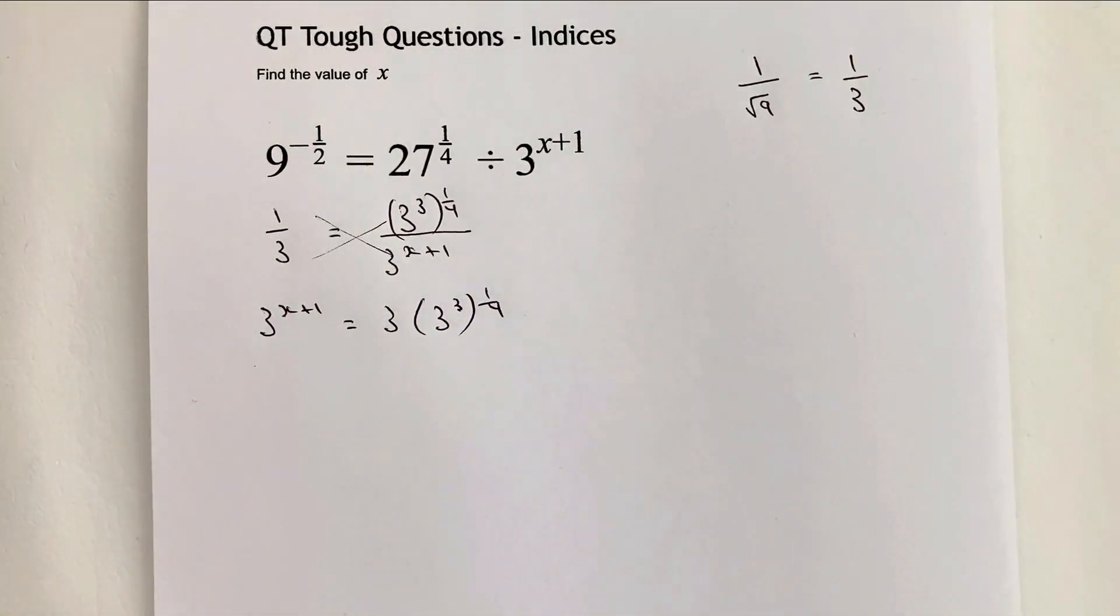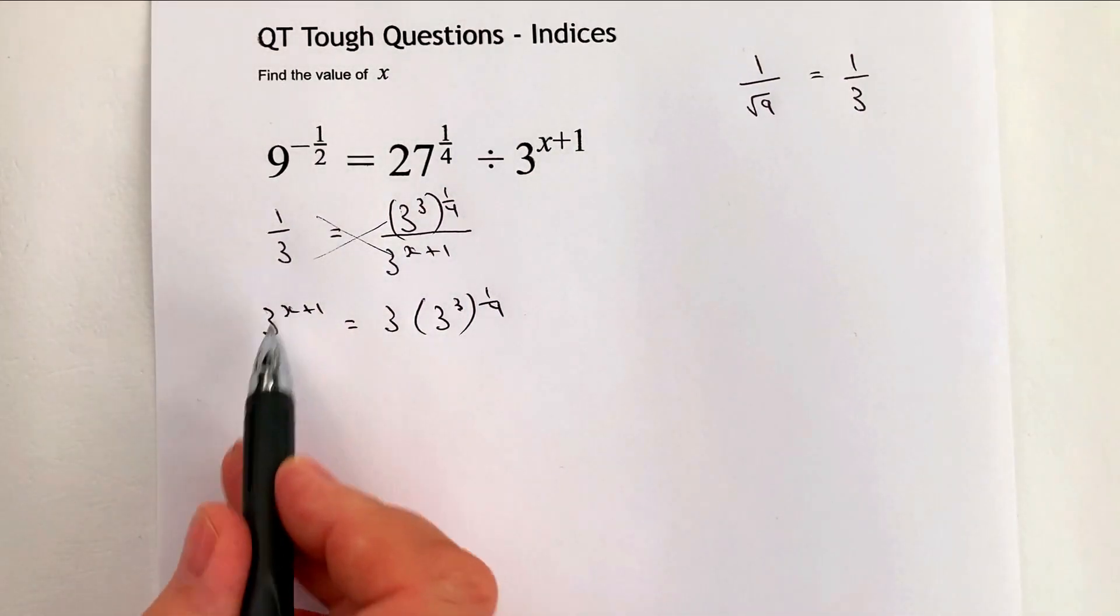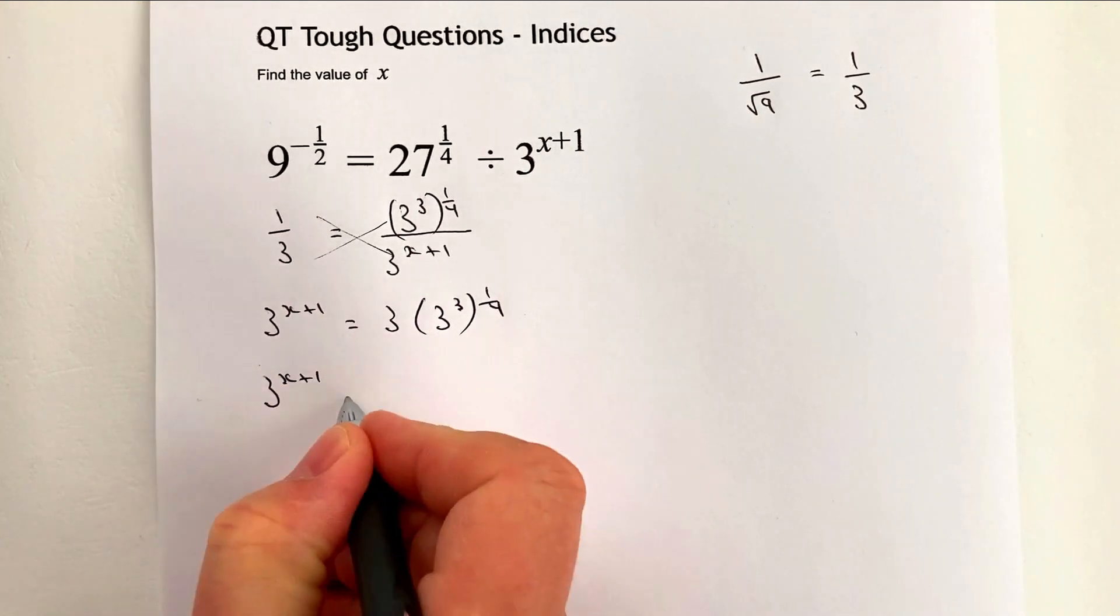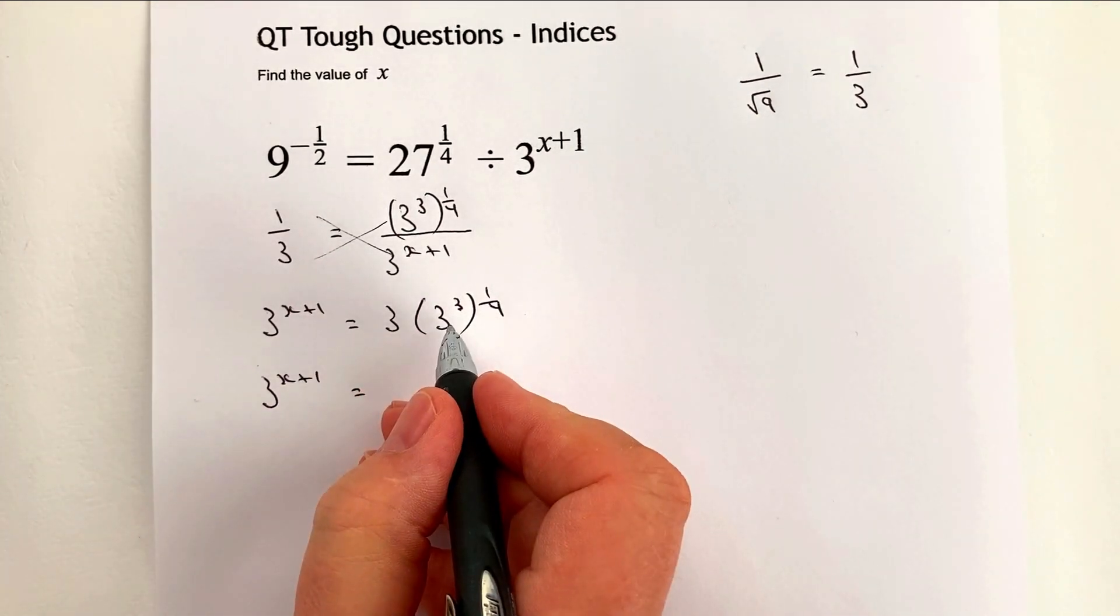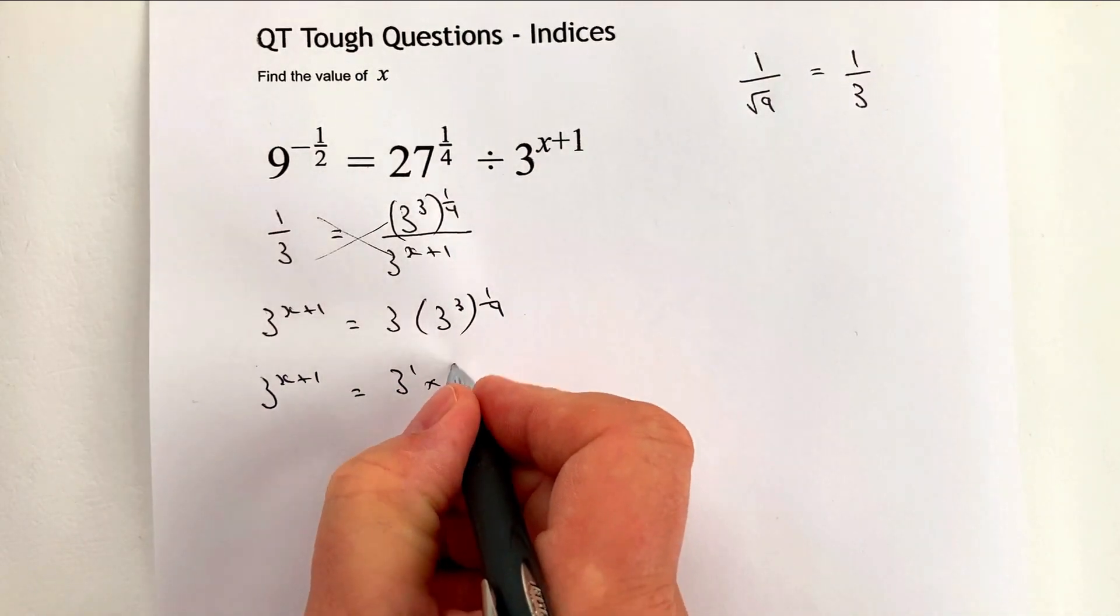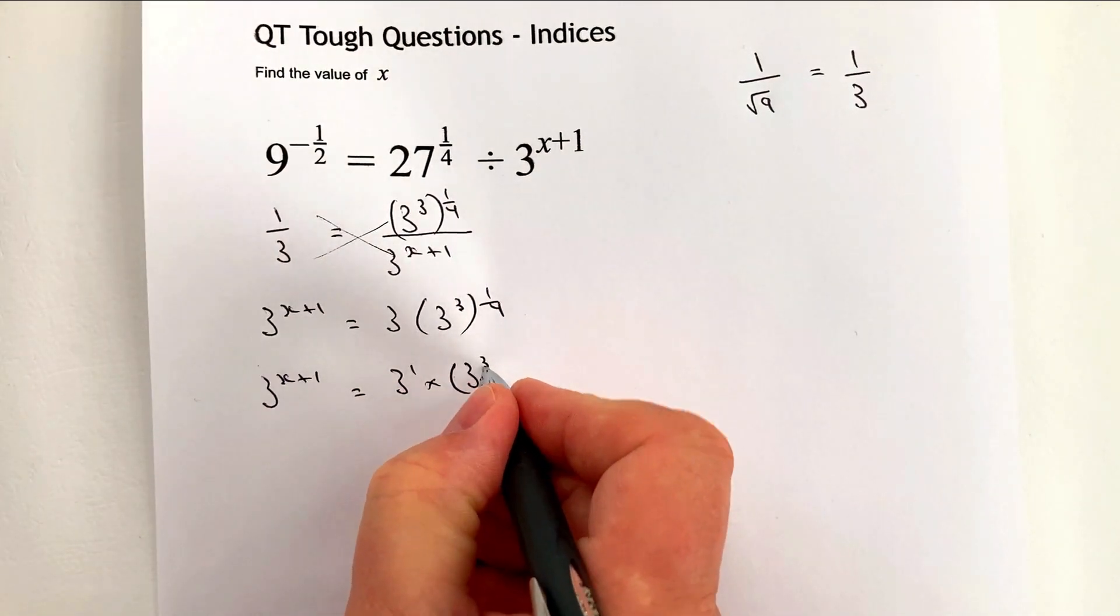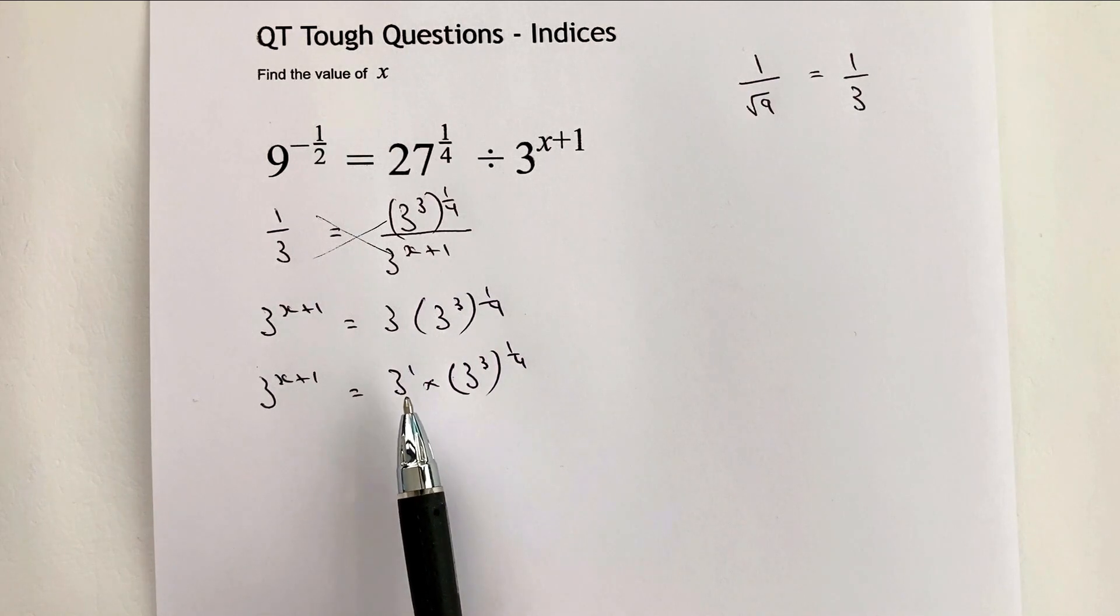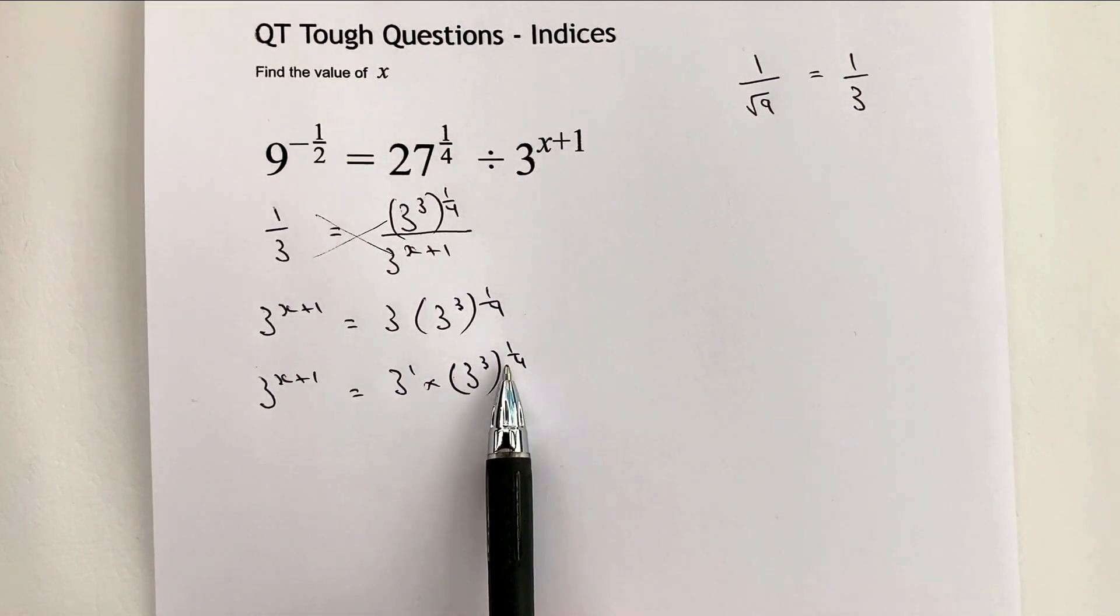Well, what we need to do now is work that out. So if I have a look at this, I've got 3x plus 1 on the left, and this is going to be 3 to the power of 1 times 3 to the power of 3 to the power of 1 quarter. So actually, what I can do is I can write this as 3 to the power of 3 quarters.